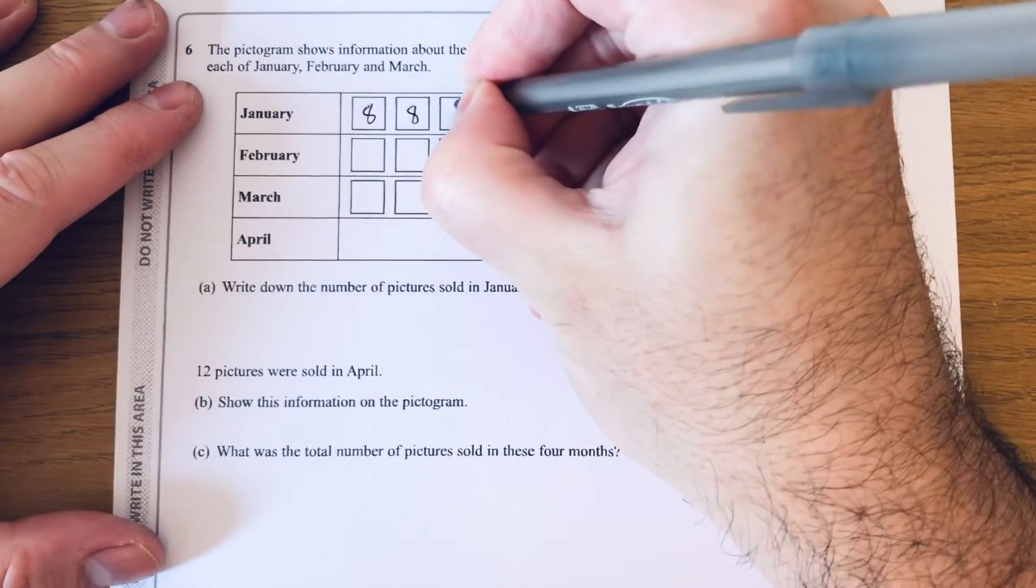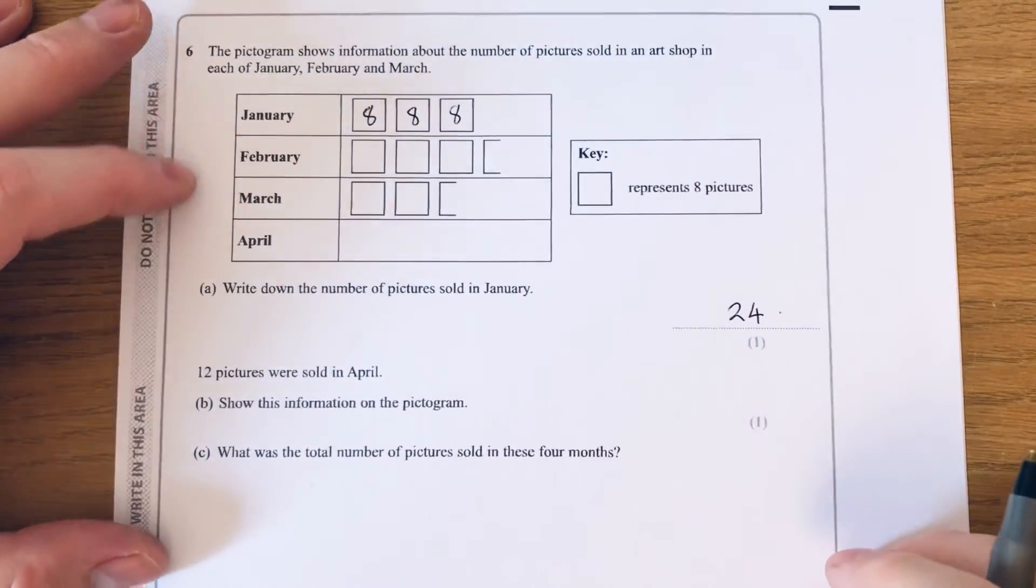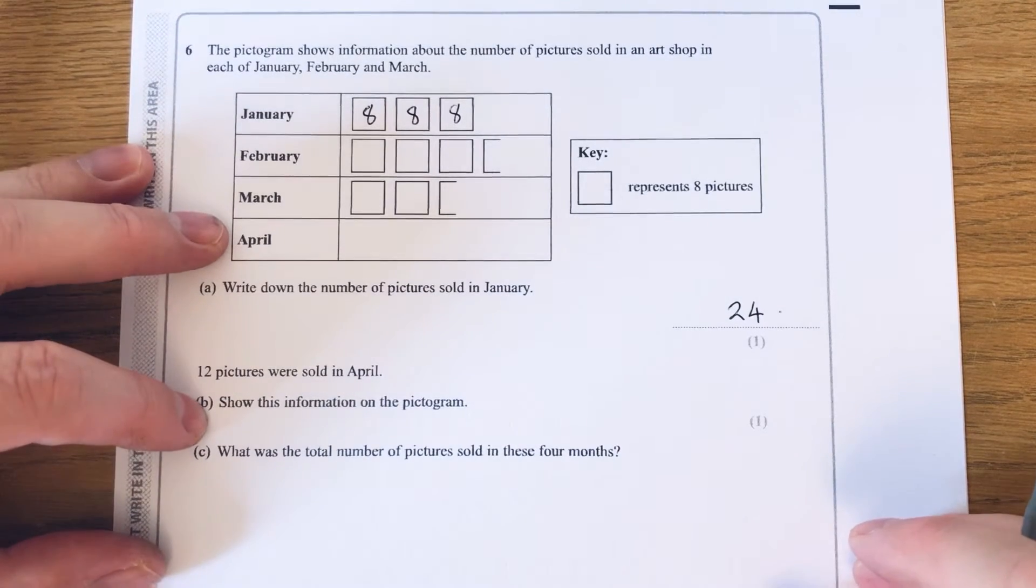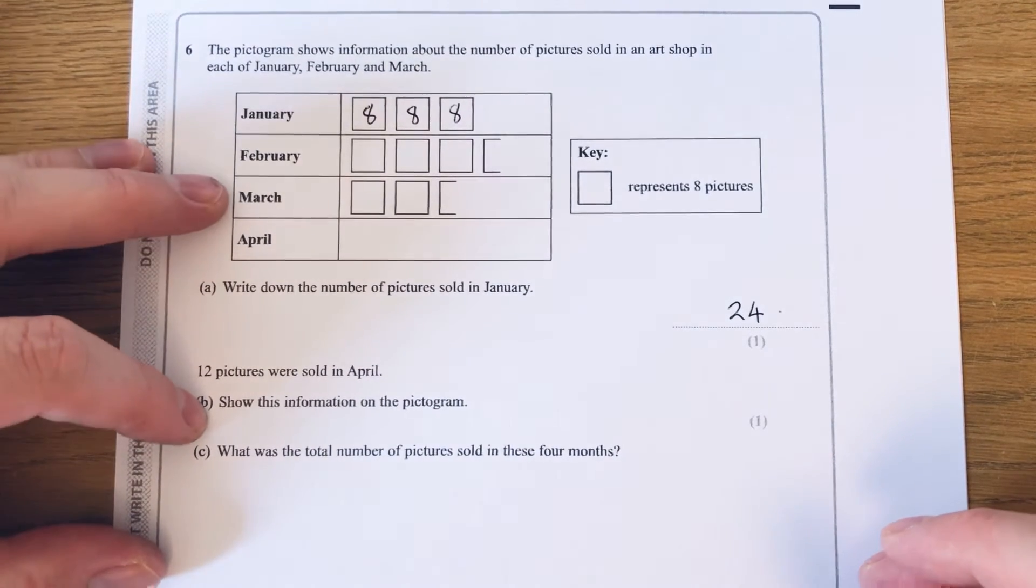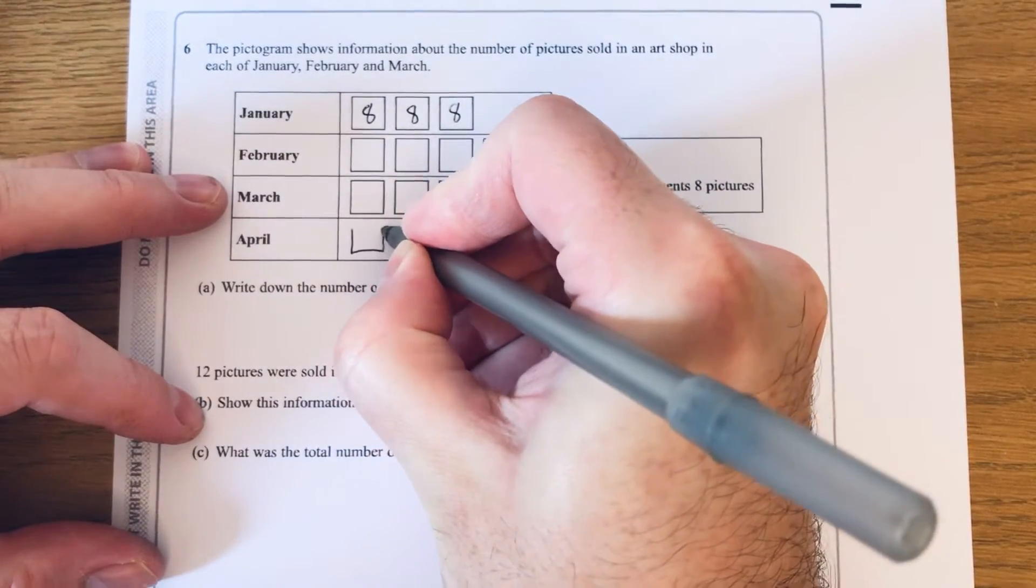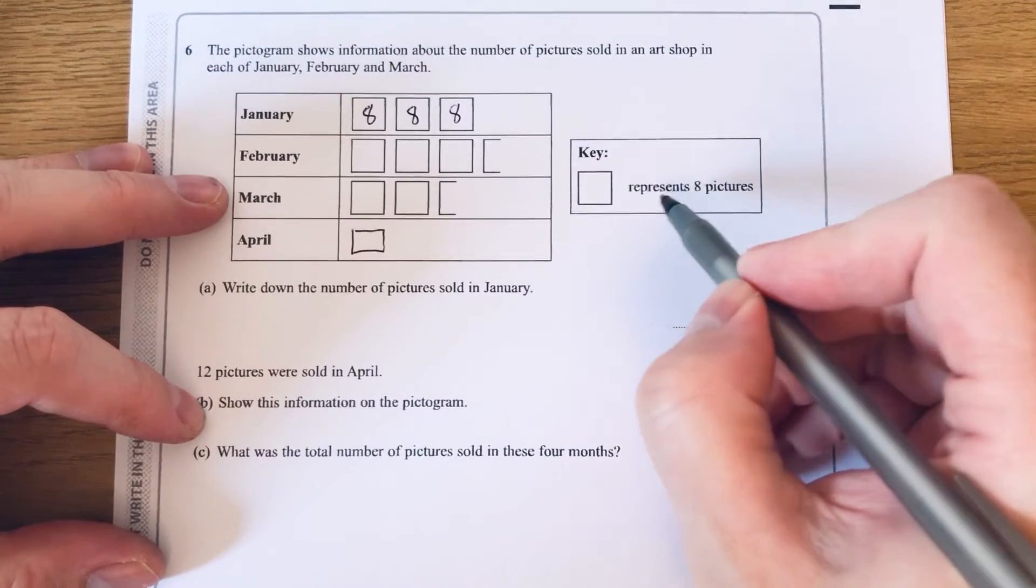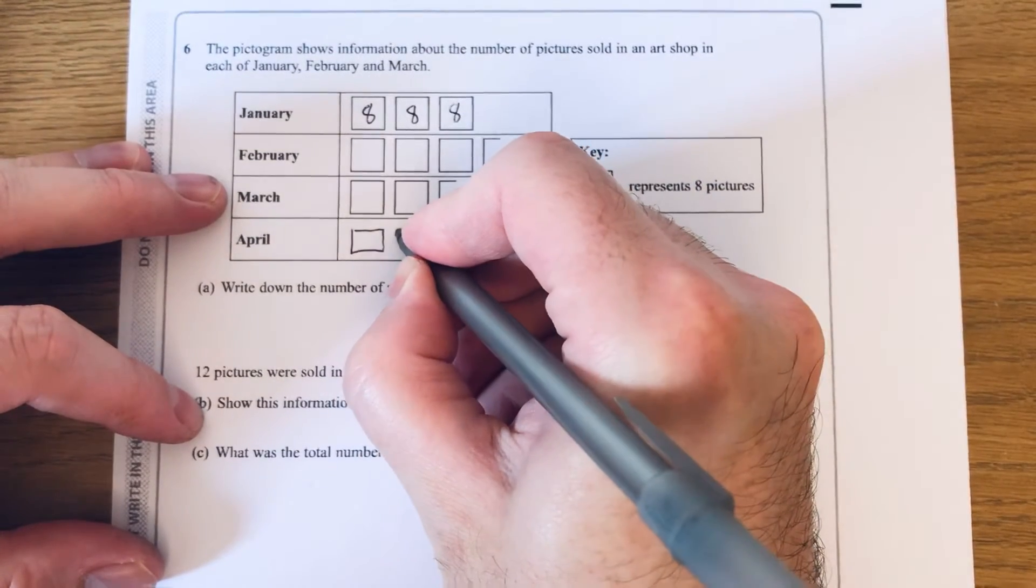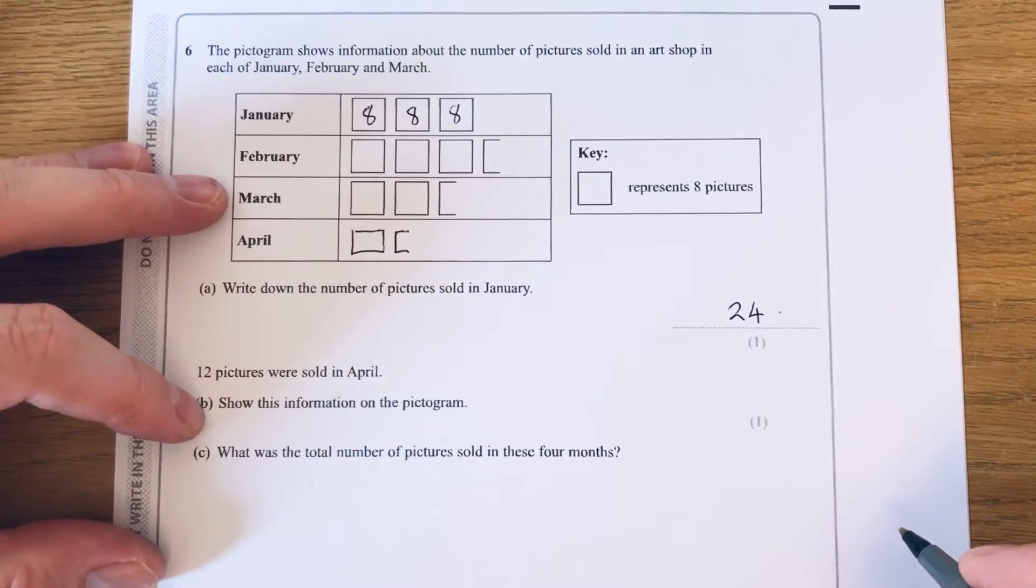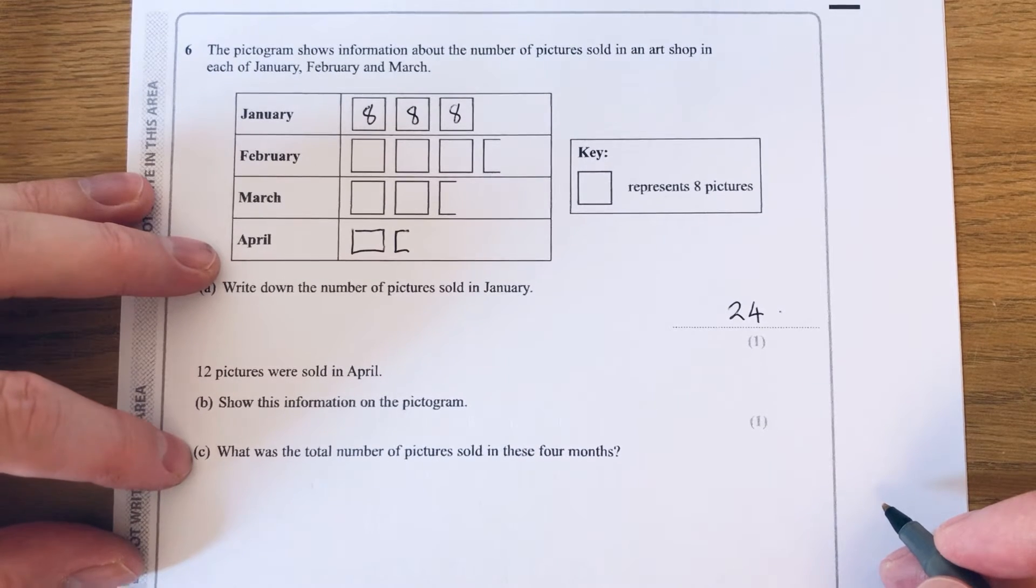Write down the number of pictures sold in January. We've got a full square, then that's eight. So we've got eight, eight, and eight, so three eights are 24. Twelve pictures were sold in April. Share the information on the pictogram. We'll need a full box, that's eight, and then if we do a half a box that would be four. So eight add four gives us 12.